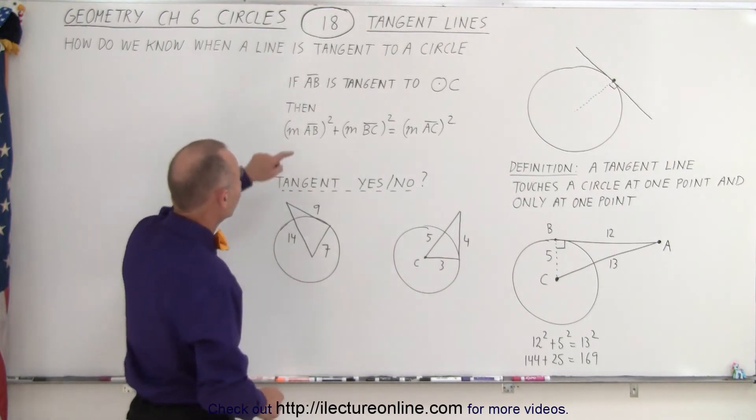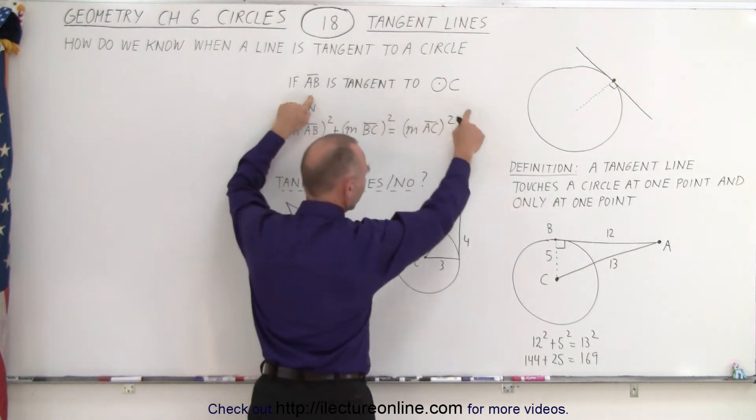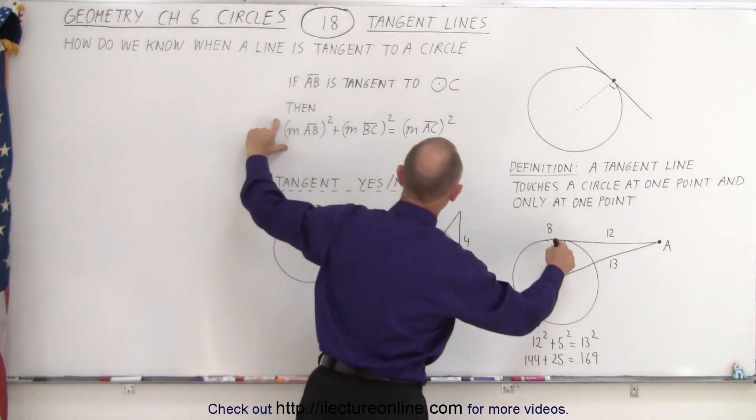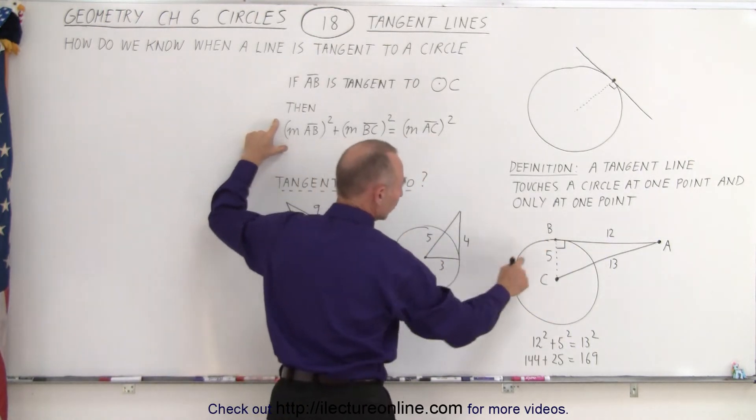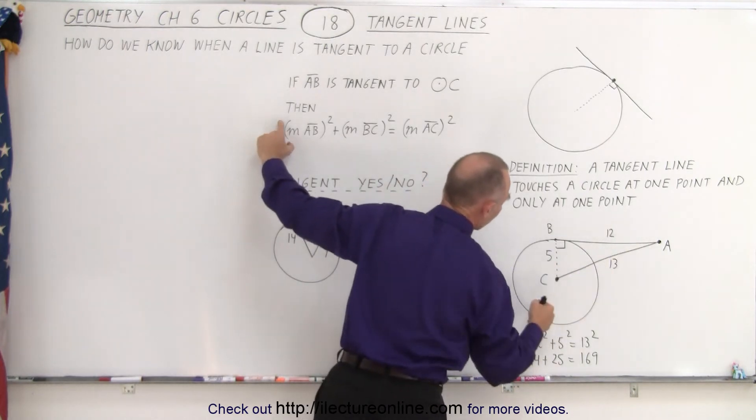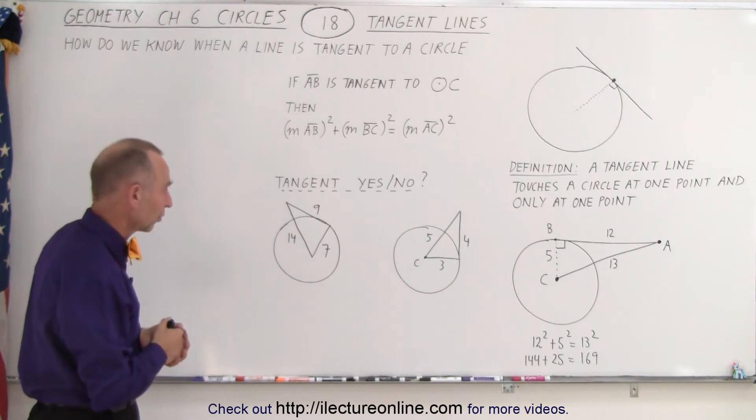So if segment AB, from A to B, is tangent to circle C defined by the center of the circle right here, then the measure from A to B squared plus the measure from B to C squared must equal the measure from A to C squared. And so, again, that's Pythagorean theorem, and that's how you know the line is tangent to the circle.